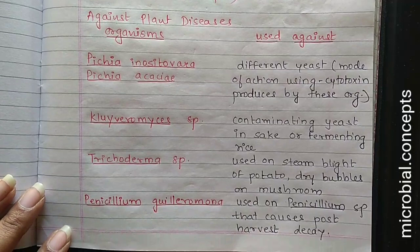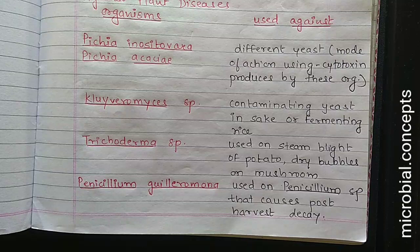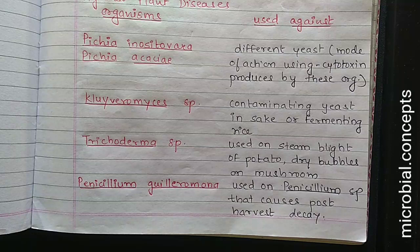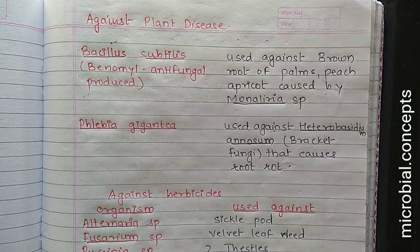Another example is Penicillium griseoroseum, which is used to control Penicillium species that cause post-harvest decay. Post-harvest decay occurs after harvesting during storage or transport of crops. Penicillium griseoroseum is used to control this decay. Next is Bacillus subtilis.